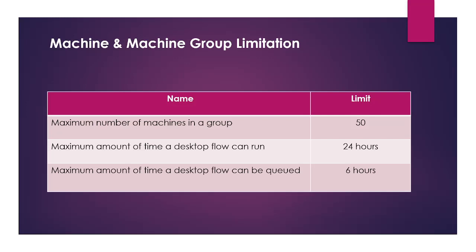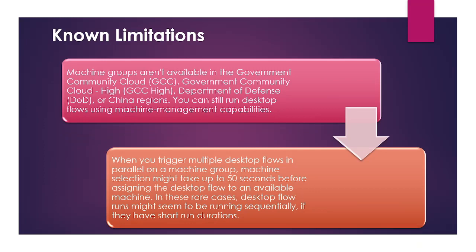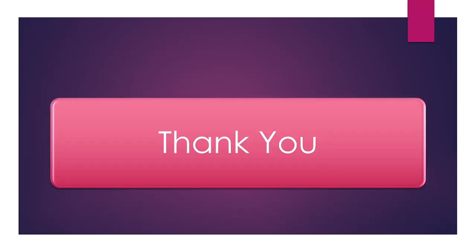The maximum amount of time a desktop flow can be queued is 6 hours. There are also other known limitations: machine groups are not available in the Government Community Cloud, Government Community Cloud High, Department of Defense, or China regions — though you can still run desktop flows using machine management capabilities. Additionally, when triggering multiple desktop flows in parallel on a machine group, machine selection might take up to 50 seconds before assigning a flow to an available machine, and in these rare cases flows might appear to run sequentially if they have short run durations.